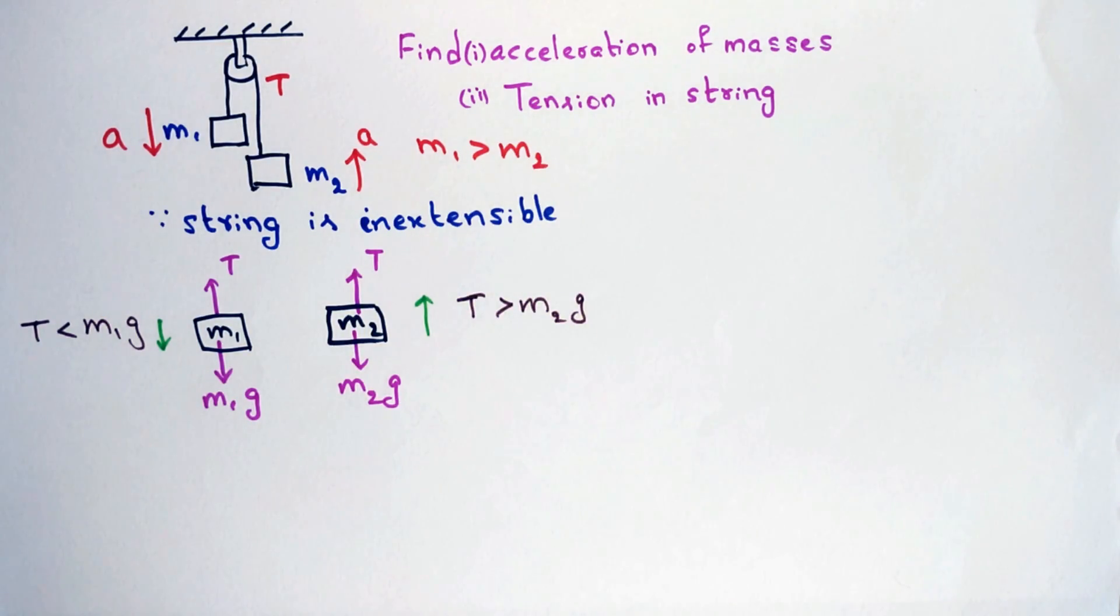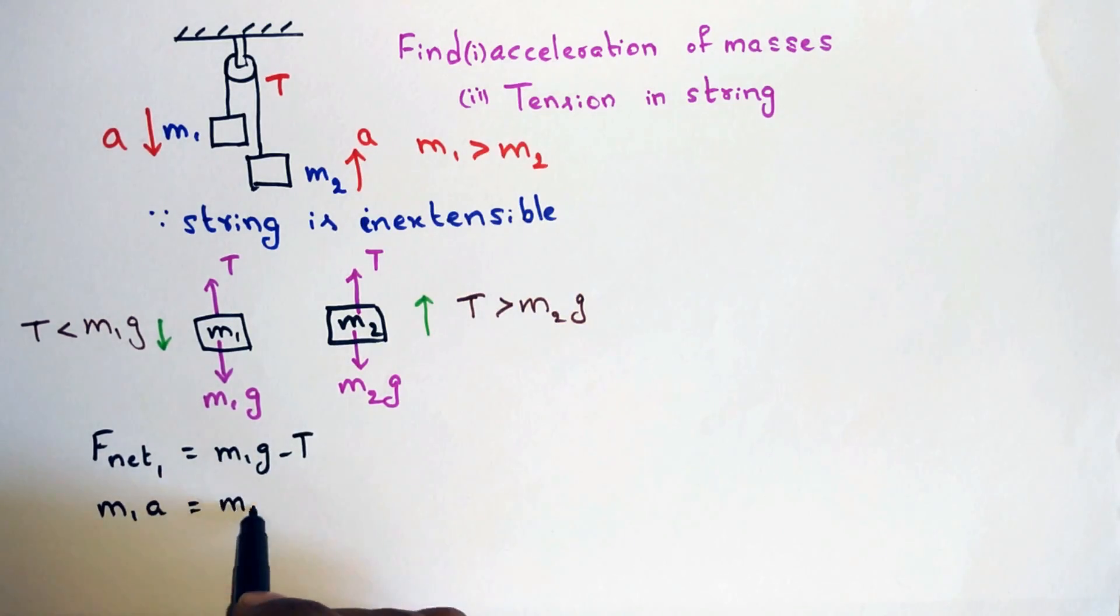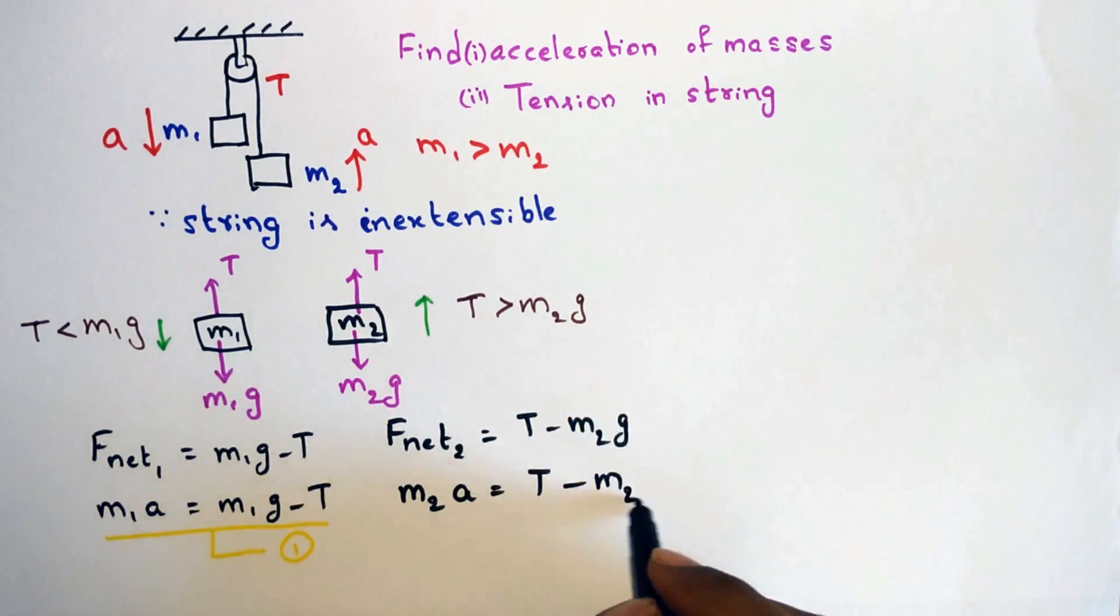So let's find the net force acting on m1 which is m1g minus T. And we can write net force as m1 into a. So let it be equation 1. On doing the same for m2 we will get equation 2. So we need to solve these two equations to find a and tension T.